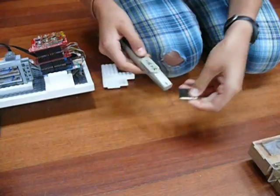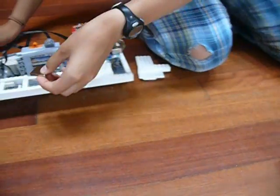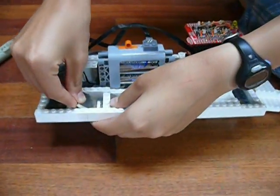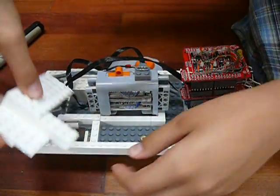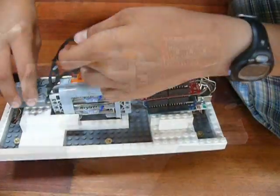Here our levitation magnets are placed inside the car so that they will repel the levitation magnets on top of our track. Our IR receiver is placed on the end of our car and we are ready to put it on our track.